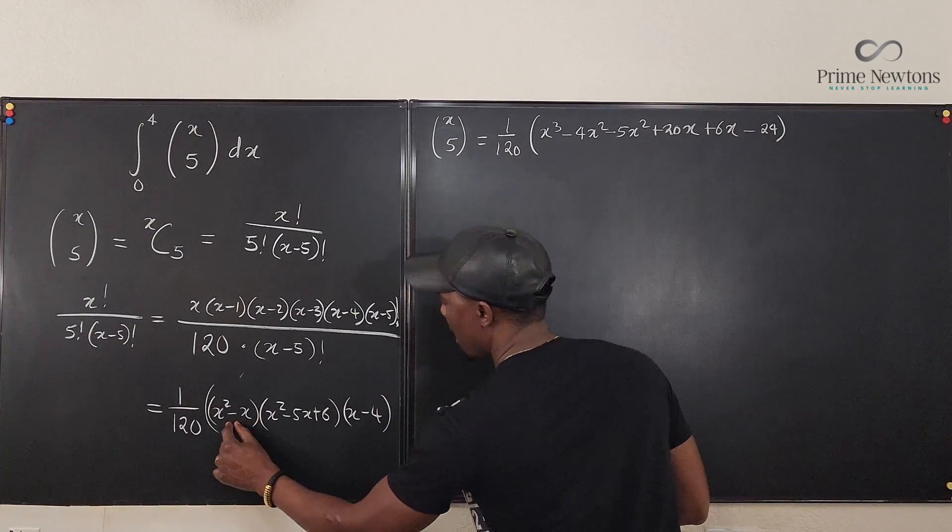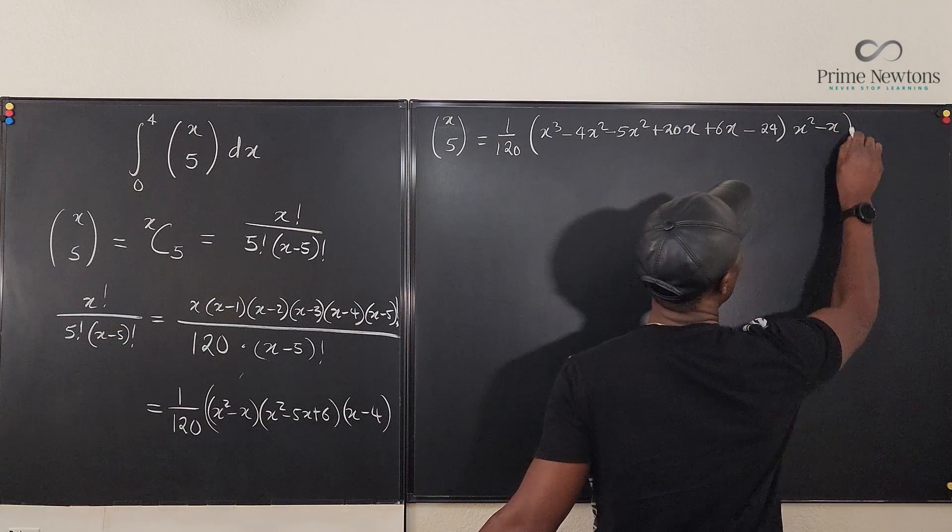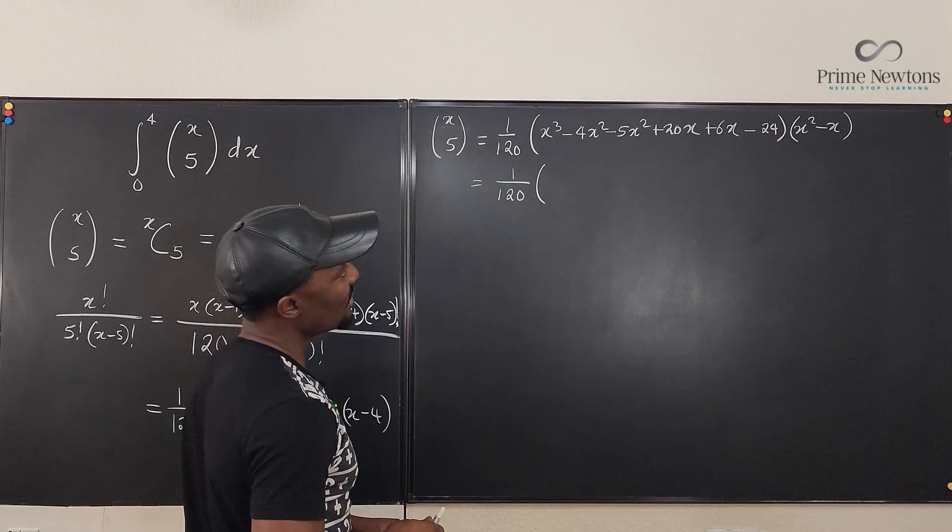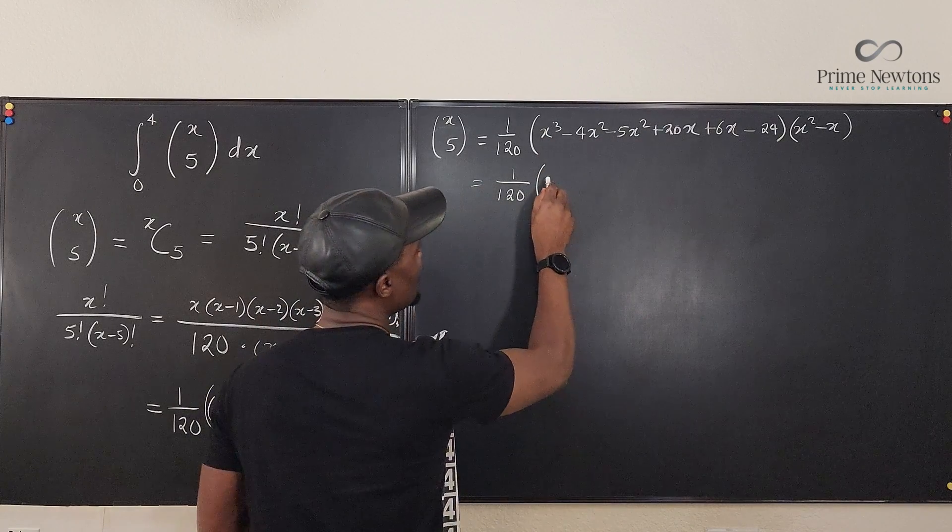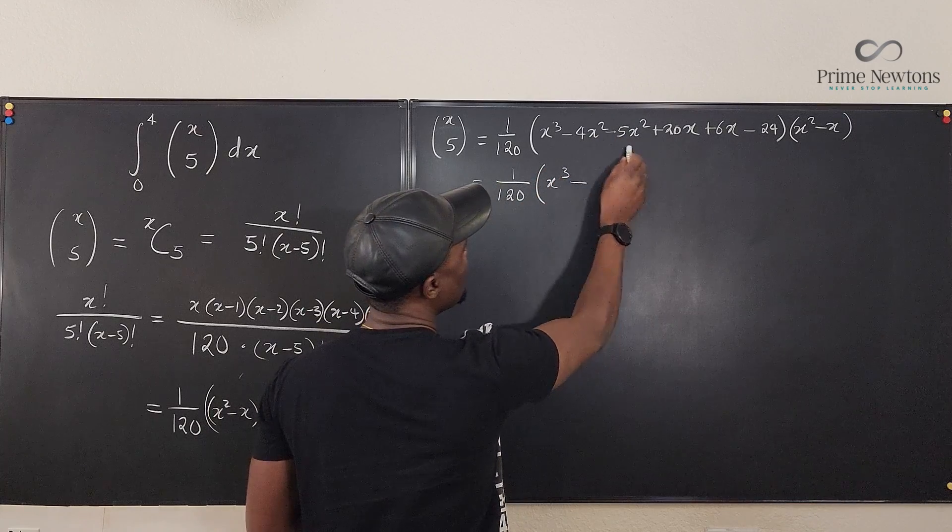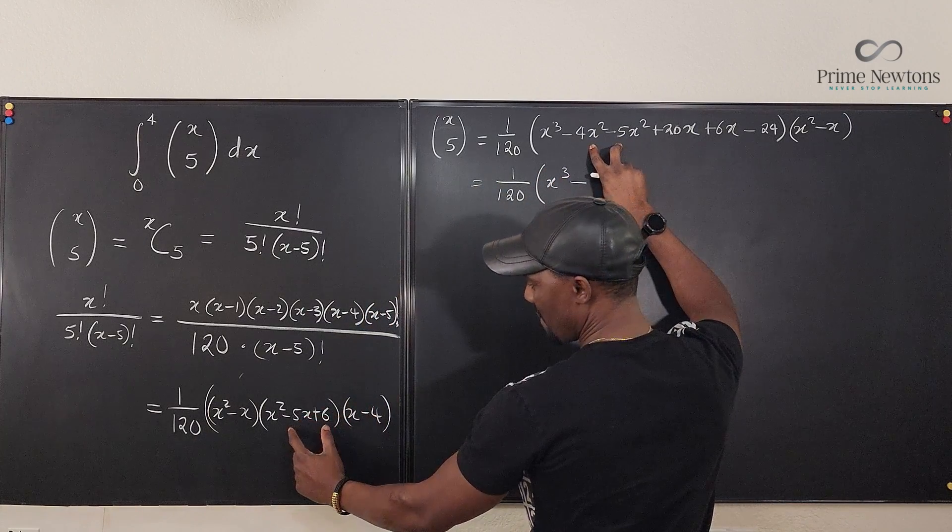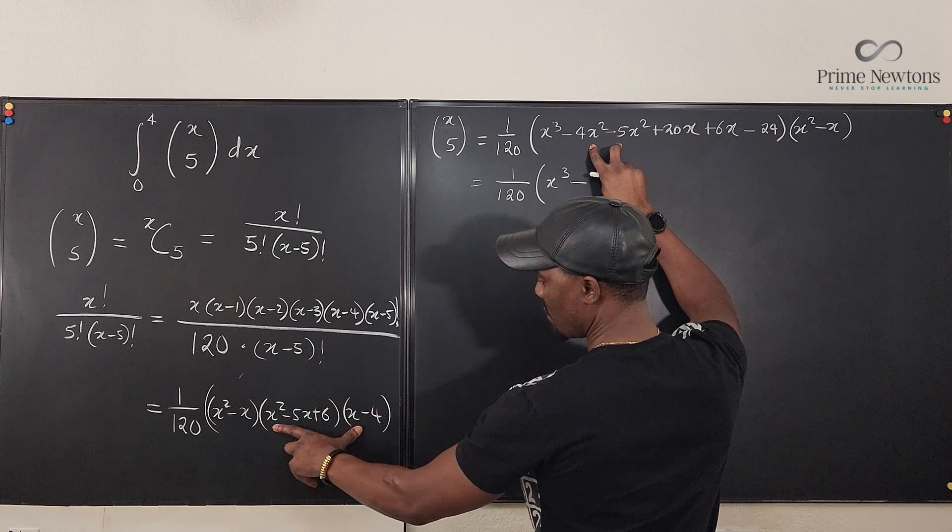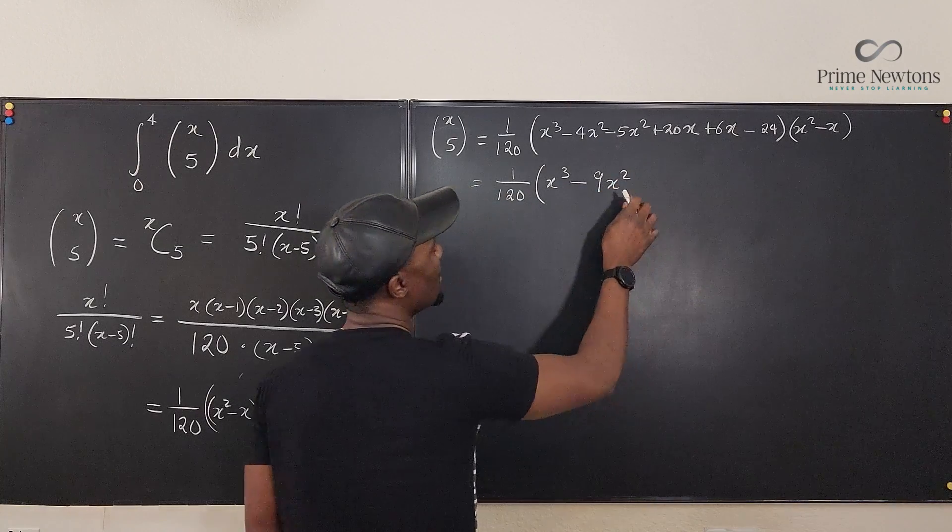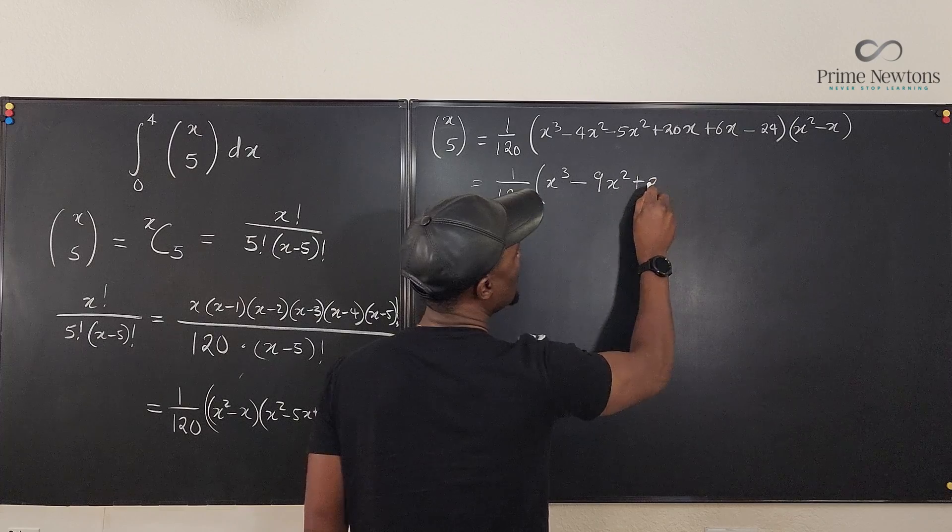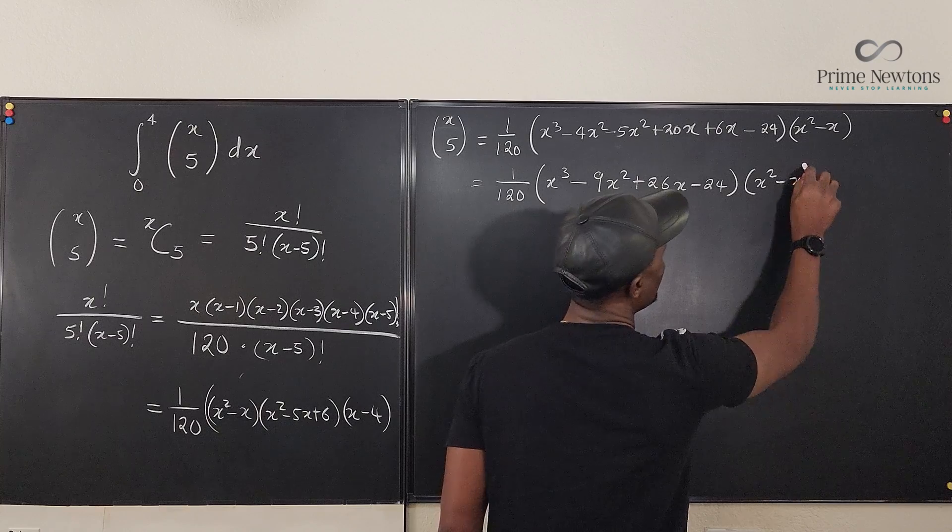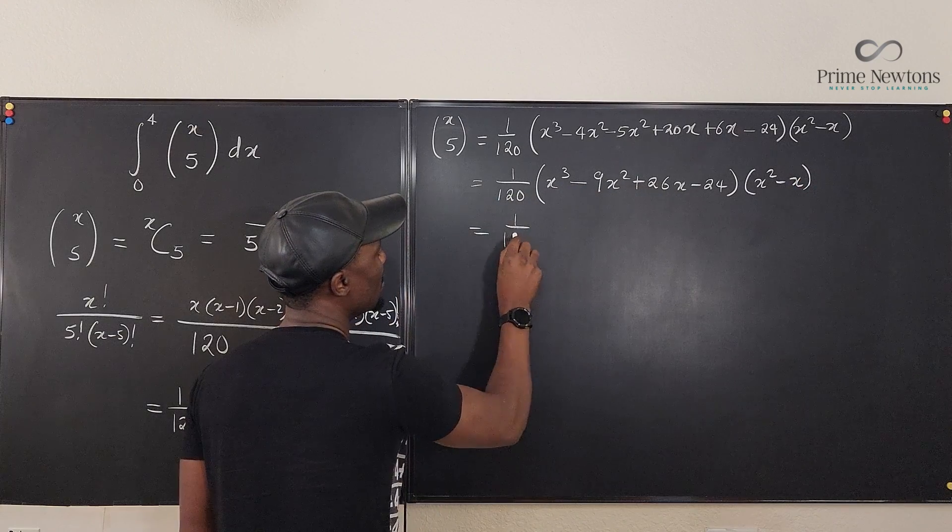And now I need to multiply by x squared minus x. Okay, this is equal to 1 over 120 multiplied by, this is going to be, let's clean this up. Okay, this is going to be x cubed. How many x squareds do we have? Oh, minus, this is going to be, is this correct? x cubed minus 4x squared. Yes, minus 5x squared. So it's going to be minus 9x squared. And then we have 20x plus 26x minus 24 multiplied by x squared minus x. Okay, let's go one more time.